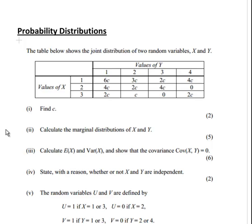In this presentation we're going to look at joint probability distributions. What we have here is the joint distribution of two random variables x and y, presented in a table. They're both discrete random variables, and what we're asked to do is find the value of c, because this is related to the probabilities.